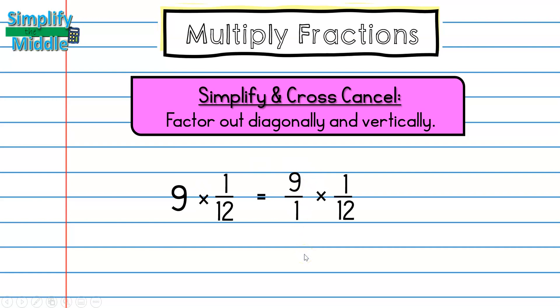Now I'm going to multiply that by 1 twelfth. Looking diagonally, I see that 9 and 12 have a common factor of 3. So I cross out the 9 and 9 divided by 3 is 3. I cross out my 12 and 12 divided by 3 is 4. So my answer here is going to be 3 fourths.